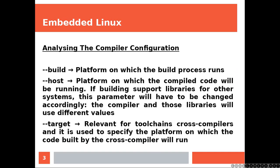If building support libraries for other systems, this parameter will have to be changed accordingly, and the compiler and those libraries will use different values. And finally, target — target is relevant for toolchains and cross-compilers, and it's used to specify the platform on which the code built by the cross-compiler will run.